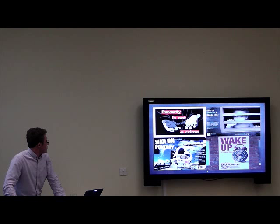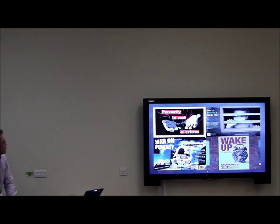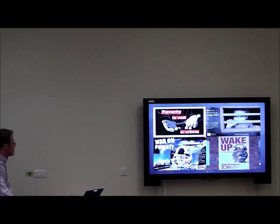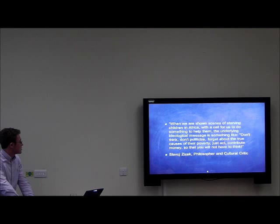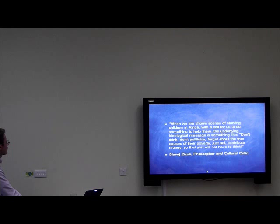Just like these posters we often see for poverty — like the map, they don't actually show you anything apart from that poverty exists and suggest you give some money, perhaps redistribute a bit of your income. They don't show you why poverty exists. Slavoj Žižek, a Slovene philosopher and cultural critic, quite important in Marxist circles, says this about the way we receive news about poverty: 'When we're shown scenes of starving children in Africa with a call to do something to help them, the underlying ideological message is: don't think, don't politicise, forget about the true causes of their poverty — just contribute so you will not have to think.'